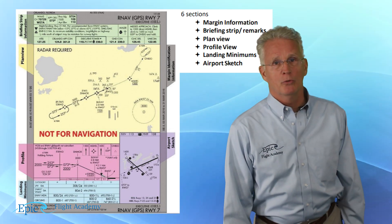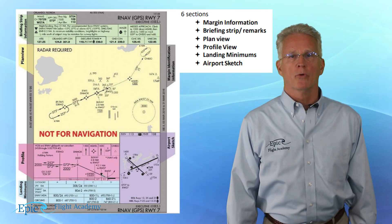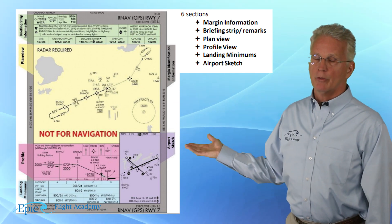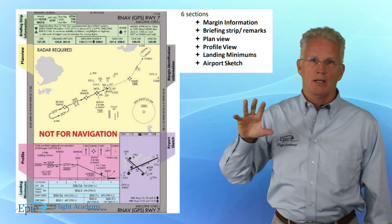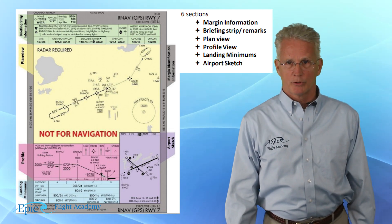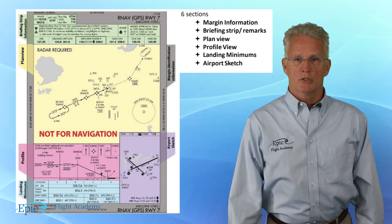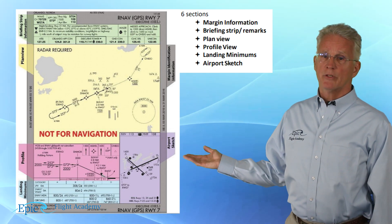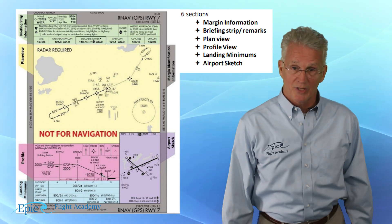Number one, in gray, margin information. Number two, and you can see this in a light green across the top, this is what we call the briefing strip and remarks. Number three, in yellow, I want you to be aware of an overhead or bird's eye or often called plan view of the approach. The plan view is critical in helping us with our situational awareness. Fourthly, I want you to take a look at the profile view. This is shown here in pink. The profile view is like looking at the approach from the side.